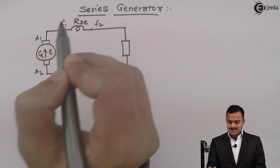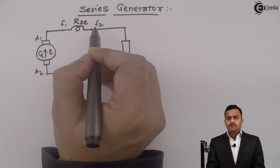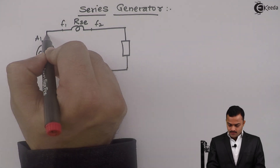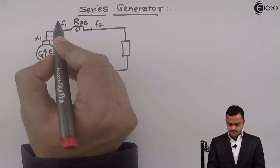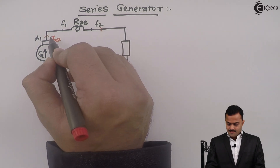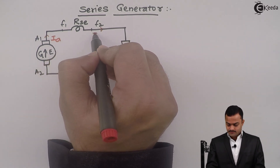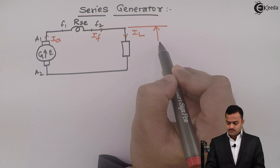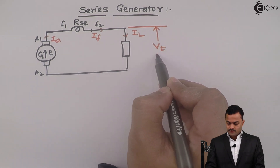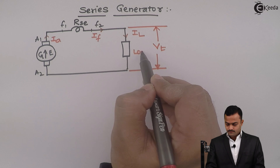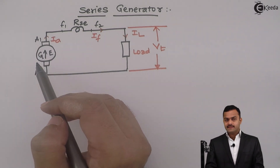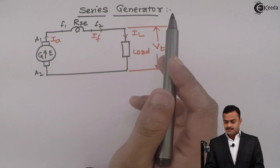RSE is the resistance of the field winding. Here, armature current IA is the same as field current, which is the same as load current IL, passing through the load, giving terminal voltage VT. We have to remember the field winding is coming in series with the armature, therefore it is a series generator.